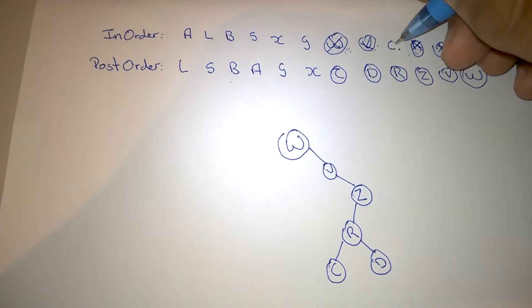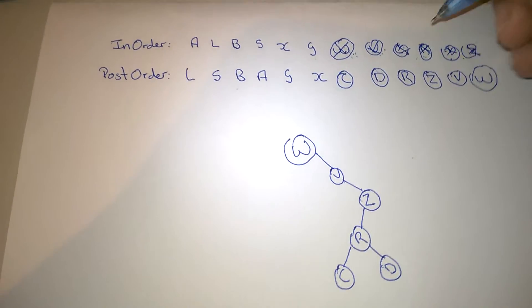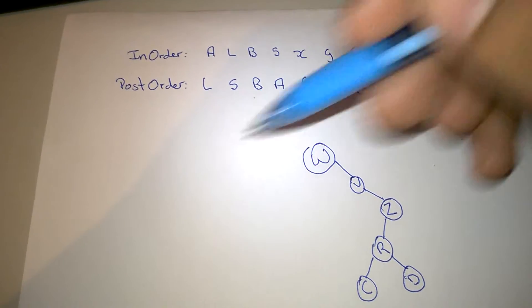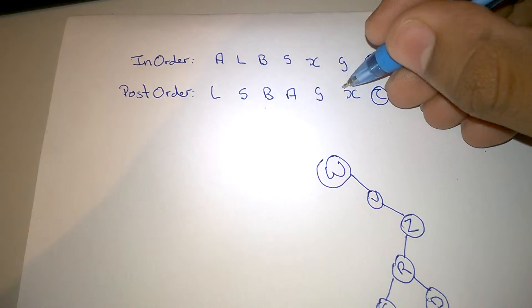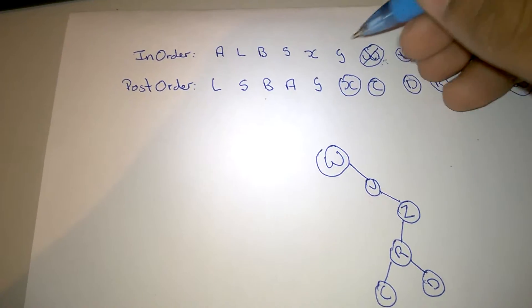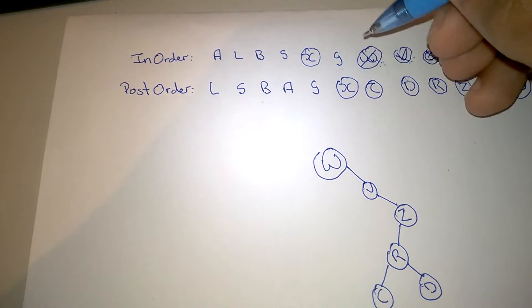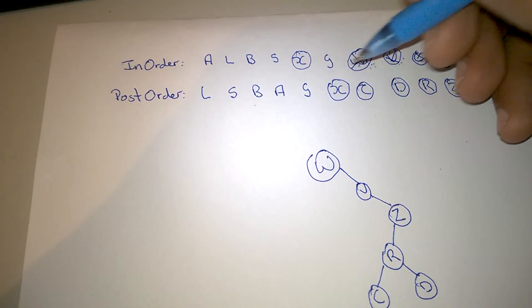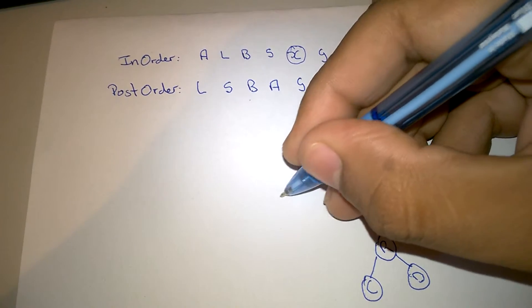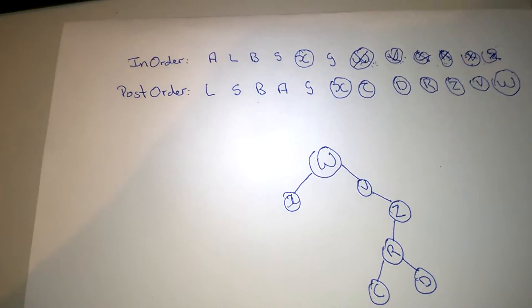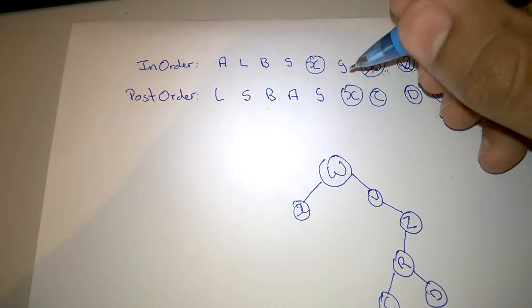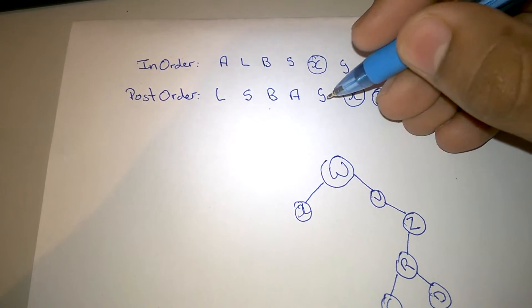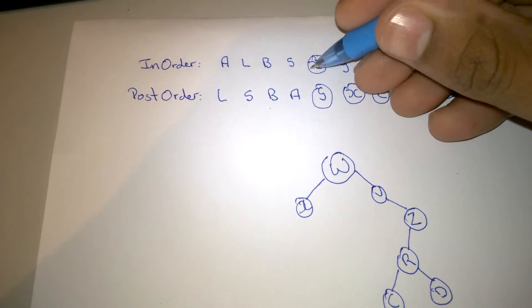Now we'll notice that everything to the right of W is complete. There is nothing else on this side of the tree, and now we are going to do the left side of the tree. So we take the next value in the post-order, X, and we look to see where X is. The parent of X is W, and X is to the left of its parent W. Now we see these values to the left of X and these values to the right of X. So we take the next value, G.